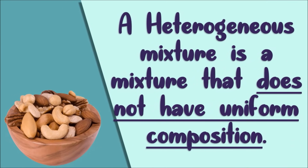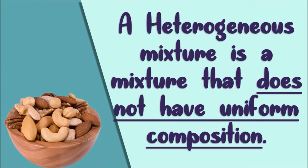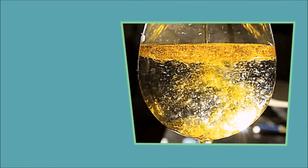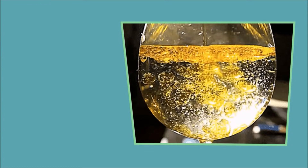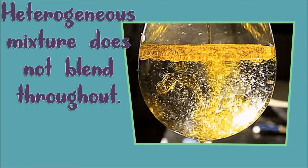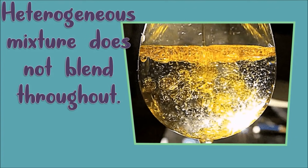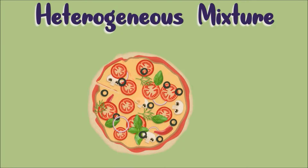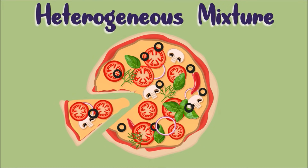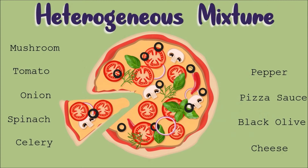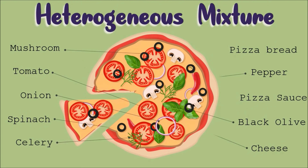A heterogeneous mixture is a mixture that doesn't have uniform composition. The composition of a heterogeneous mixture does not blend throughout. The individual substances or components are recognizable and remain distinct. The phases or substances are all visible.